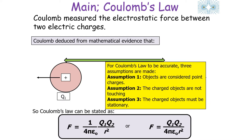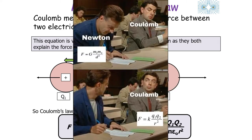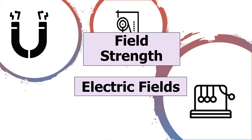For Coulomb's law to be accurate we assume three things: the objects are point charges, the charged objects are not touching, and the charged objects must be stationary. This equation is very similar to Newton's law of gravitation except we use charges instead of masses and k instead of big G.